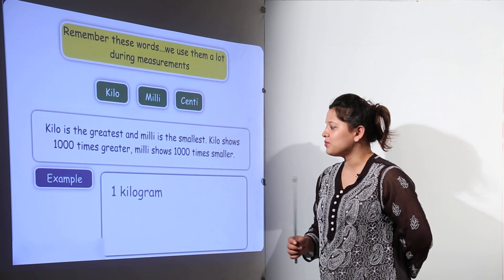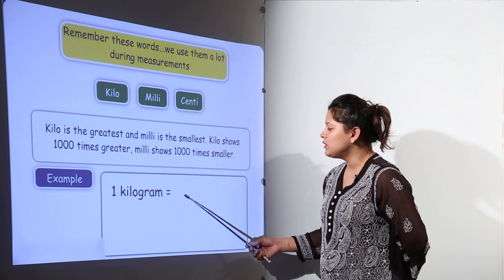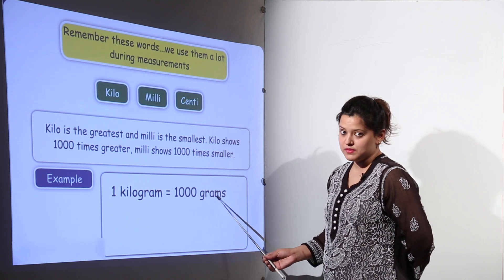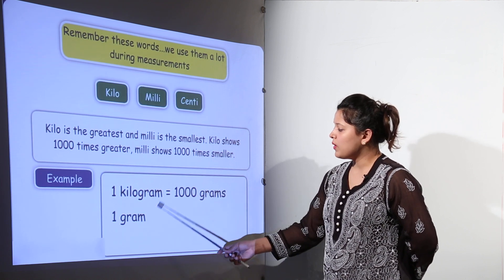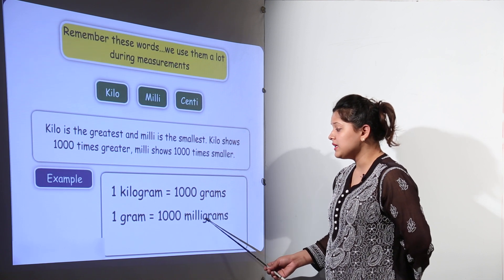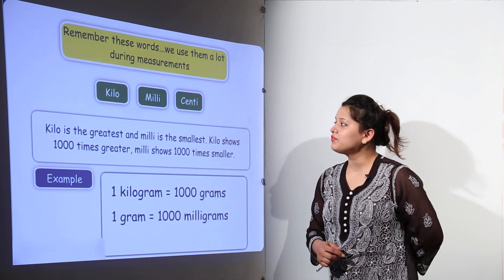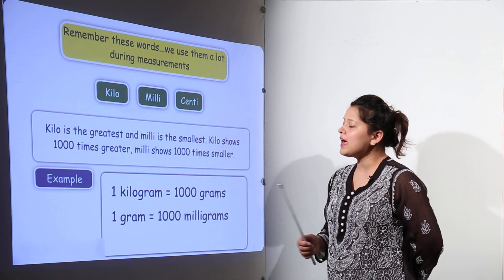For the example purpose if I show one kilogram would be equal to one thousand grams. Whereas one gram can be written equal to one thousand milligrams. So you see the difference between kilos, milli and centi.